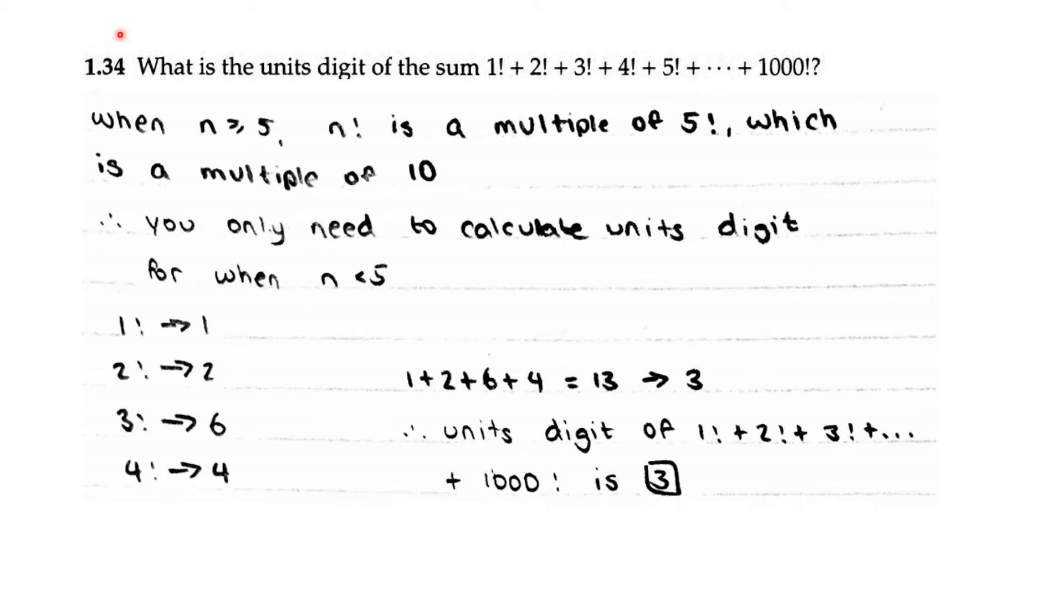AOP Counting on Probability problem 1.34: What is the units digit of the sum 1 factorial plus 2 factorial plus 3 factorial all the way to 1000 factorial?